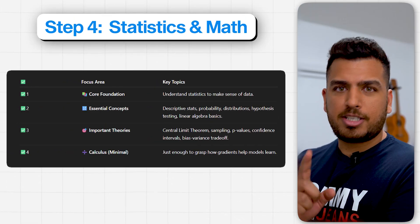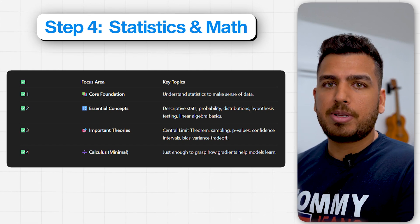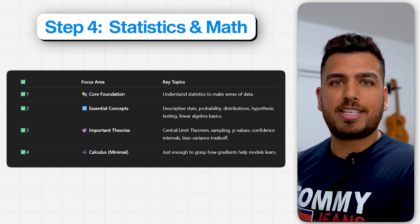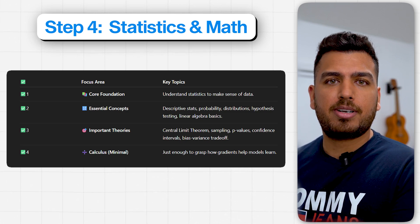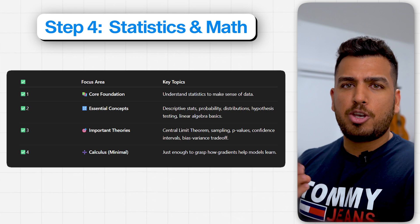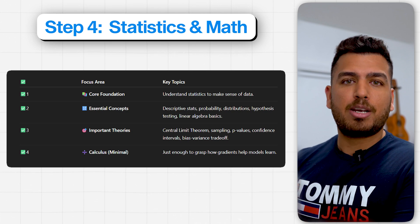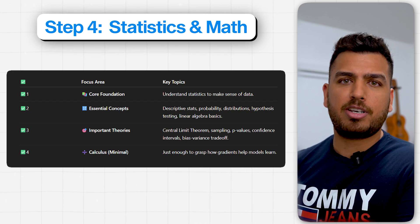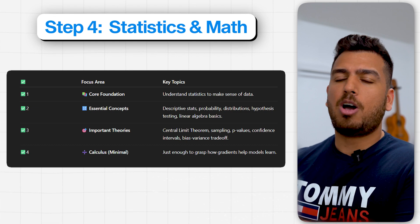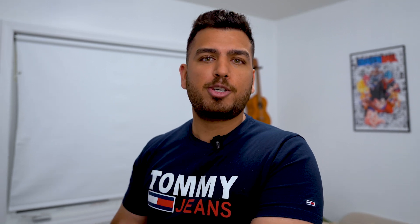Number four is statistics and maths — this is your core foundation. You'll need to understand statistics to make sense out of data. Focus on descriptive stats, probability, distributions, hypothesis testing, and basic linear algebra. You should be able to understand patterns and trends in the data, and tell what is mean, median, and mode. Imagine becoming a data scientist and not knowing what standard deviation is, what normal distribution is, or how to use different kinds of charts. I'm going to leave a link in the description for an end-to-end video covering all the mathematics you'll require.